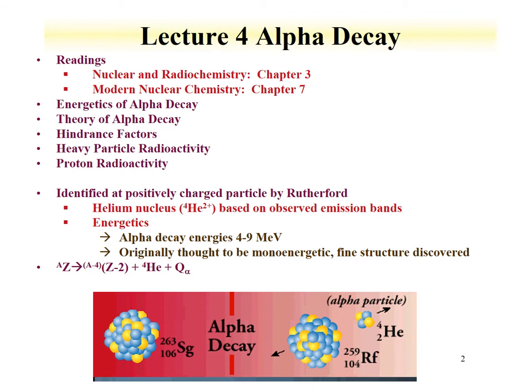The energetics of alpha decay — their energies range from 2 to 9 MeV. Originally, they were thought to be monoenergetic. However, fine structure was discovered where the alpha decay energies can vary.